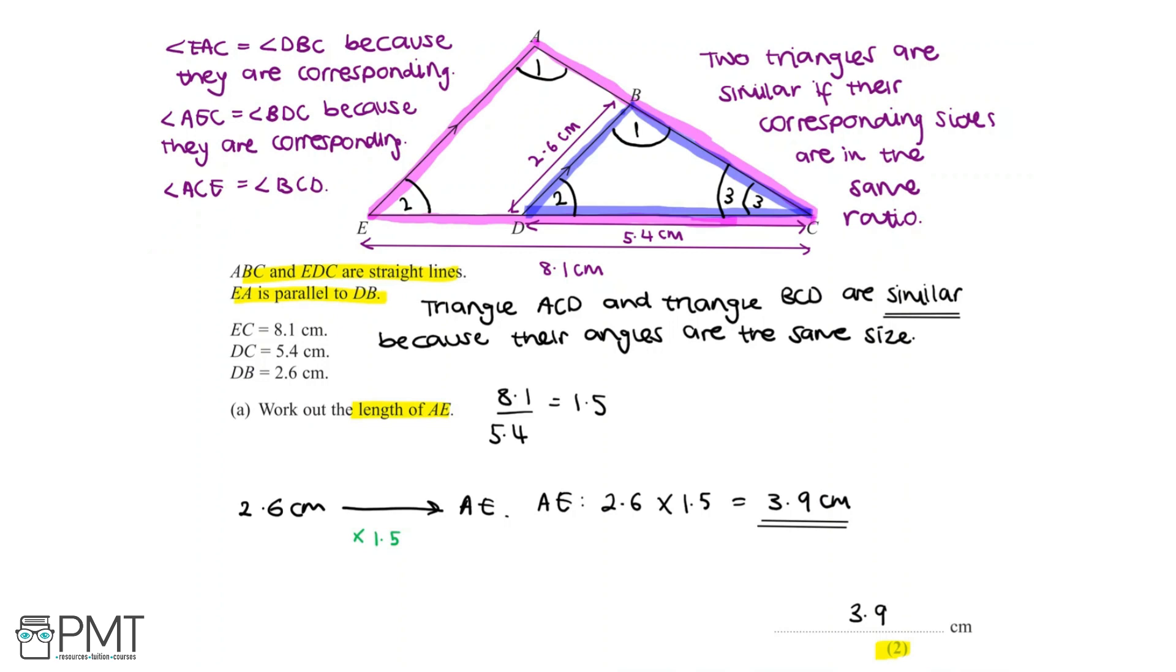To get the two marks for this question, the first mark will be for finding the scale factor of 1.5 by doing 8.1 divided by 5.4. And that second and final mark will be applying the scale factor to the length DB in order to find the length AE. We said that 2.6 multiplied by the scale factor of 1.5 is equal to 3.9cm, and we found the final answer of length AE, which is 3.9cm.